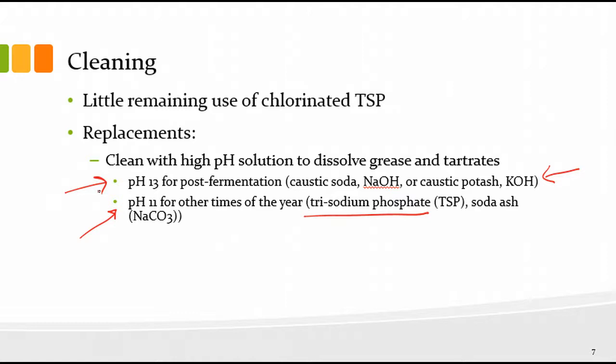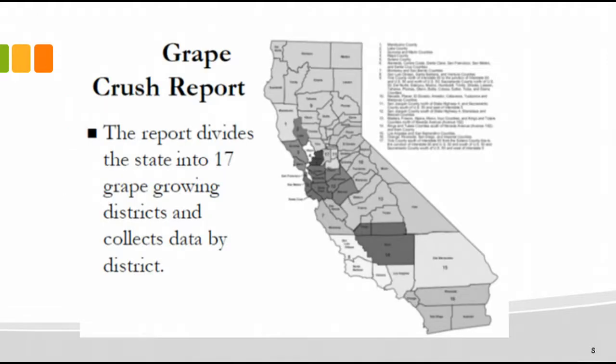Higher pH requires a little more personal protective equipment — goggles, gloves, wearing an apron like we do in class, that sort of thing. So those are a couple of the chemical choices commonly used in the winery, and we will be talking about that as we get further along this semester.